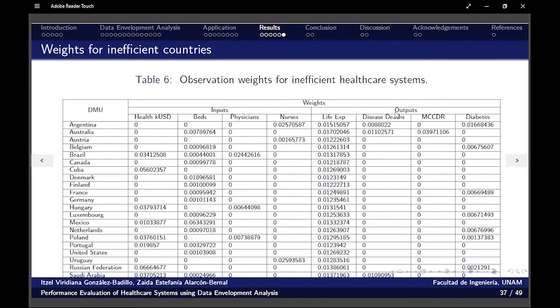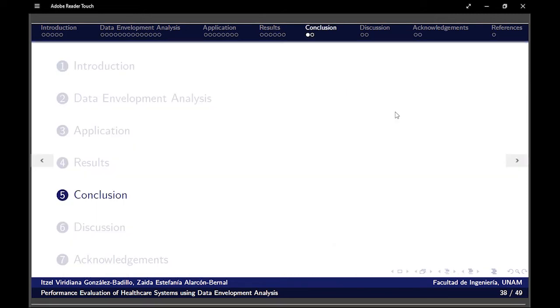Also, the weights for inefficient countries. This is similar to the first table that we saw. But here the thing would be that since these countries are not being efficient, they would have to improve these things so they can do better.